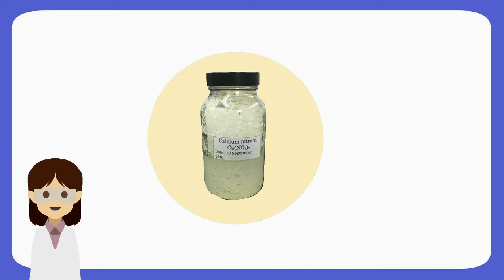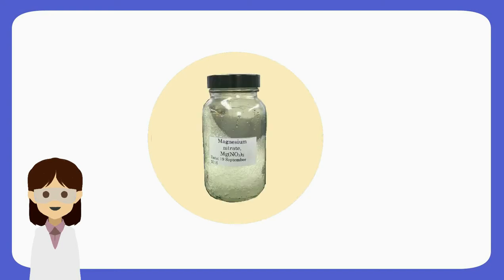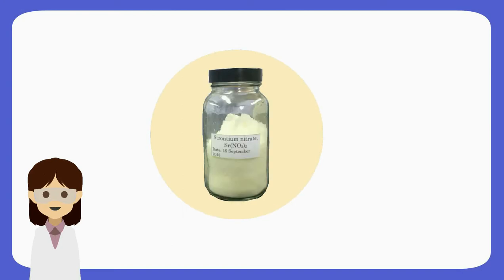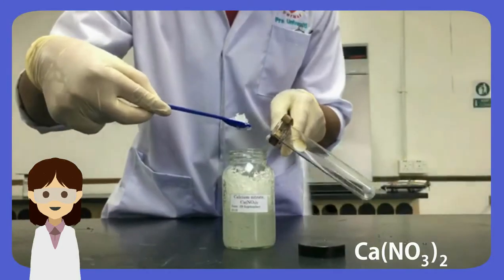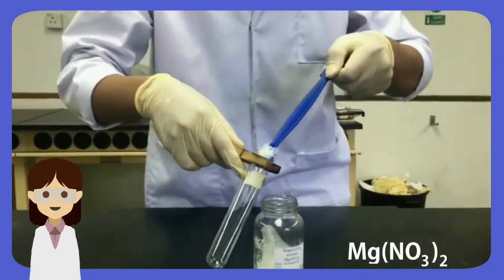First of all, we will use 1 spoon of hydrated calcium nitrate, 1 spoon of hydrated magnesium nitrate, and 1 spoon of strontium nitrate. And then, we will transfer the substances into a test tube.